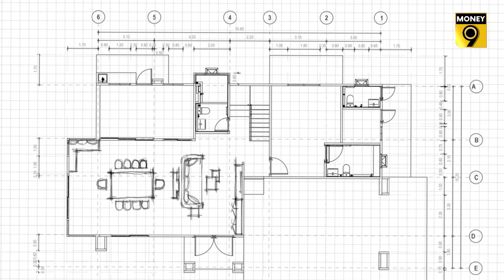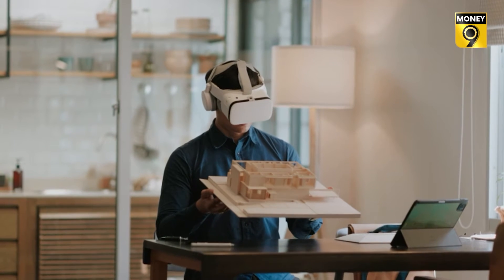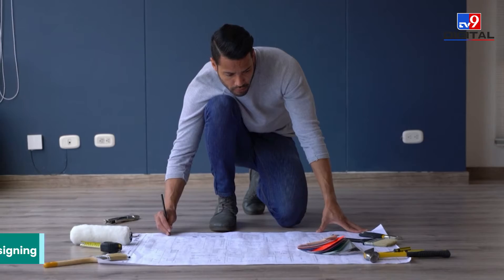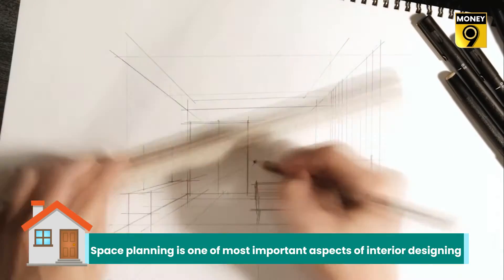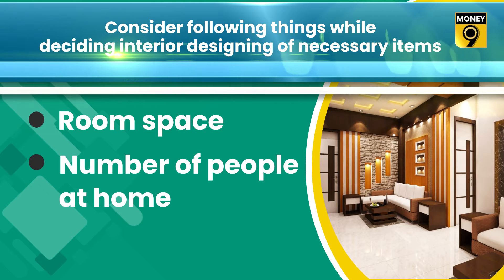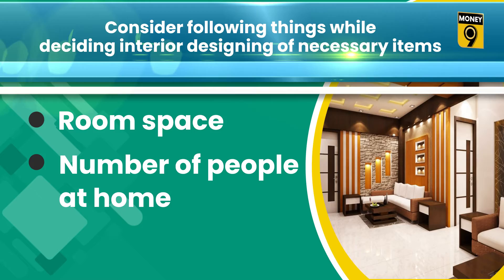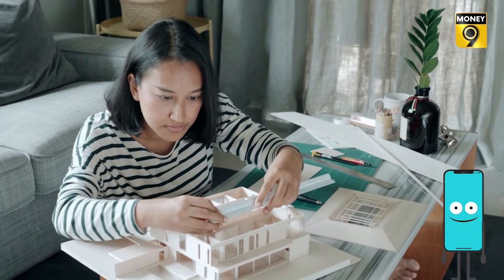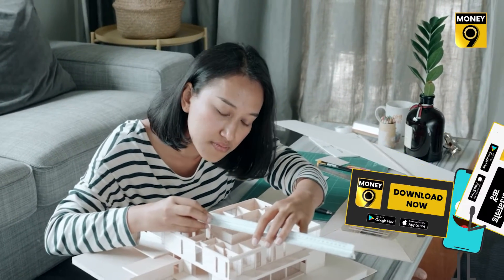Before designing the interiors of your home, you should consider the following tips so that you spend less money and your house also shines bright. Step 1: Understand how much space you have in your room. Space planning is one of the most important aspects of interior designing. Understanding what is needed in the room and how much space you have is the first step. How many people live in the house? Why are you designing? You should know the answers to these questions.